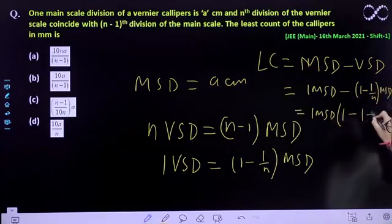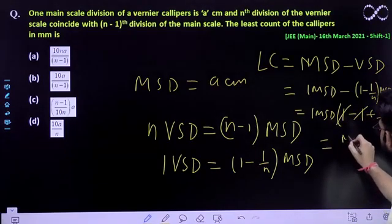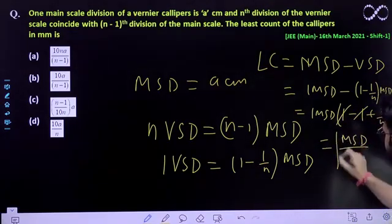One MSD times (1 minus... this goes inside, so it becomes minus). One minus one cancels. You will be getting MSD/n.